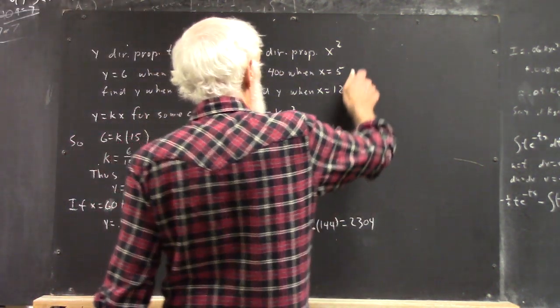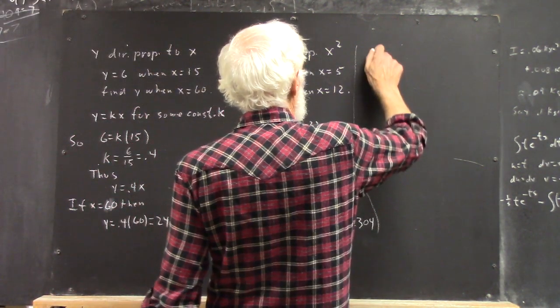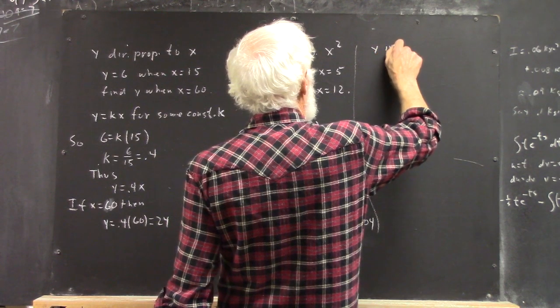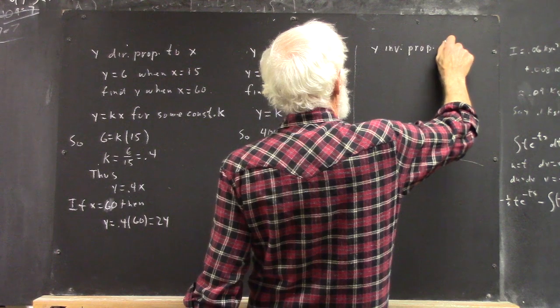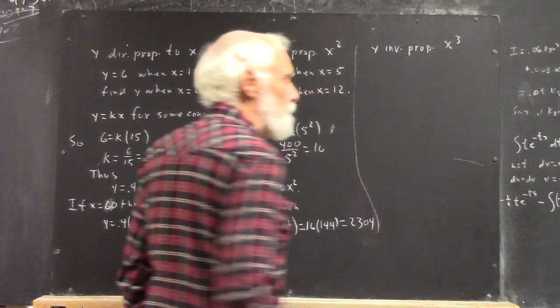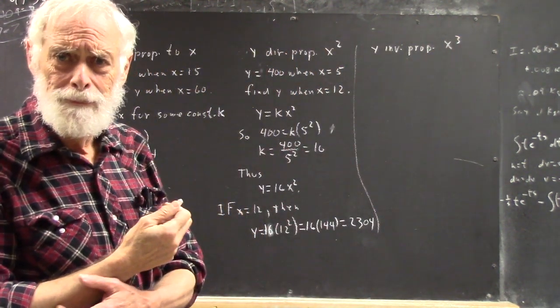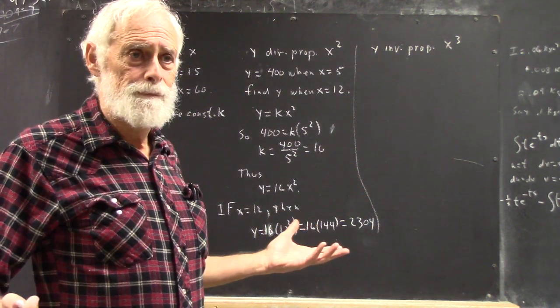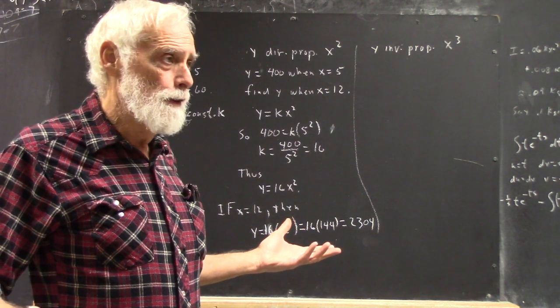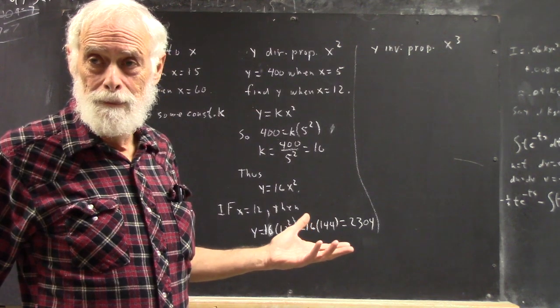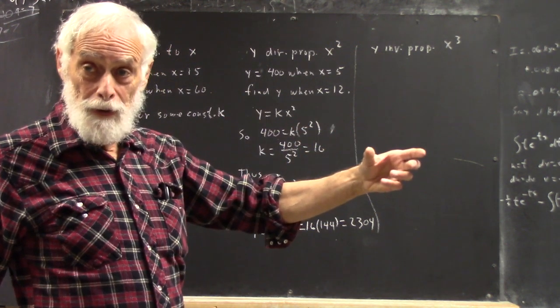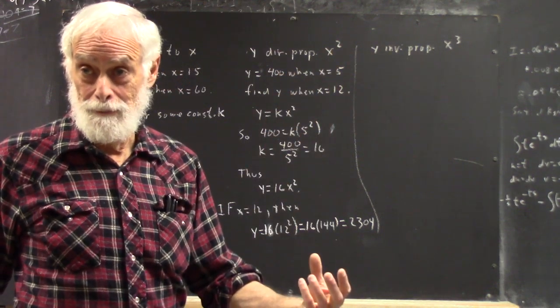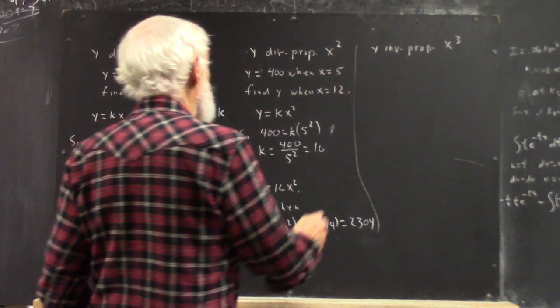And let's say that now y is inversely proportional to x cubed. Somebody want to tell me what that means? What's inversely proportional mean? It means instead of k times the thing, it's k divided by the thing. This means.